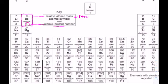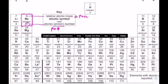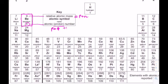For beryllium, the atomic number is four, meaning four protons. Since protons are positively charged, that gives a charge of +4. To cancel that out, you must also have four electrons. So every time you have the atomic number, it tells you both the number of protons and the number of electrons.